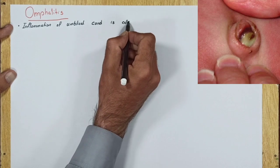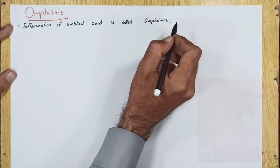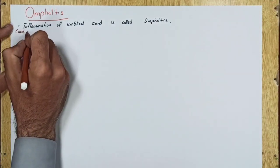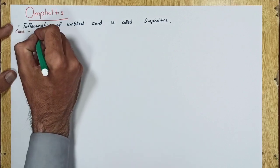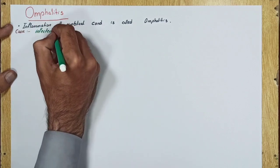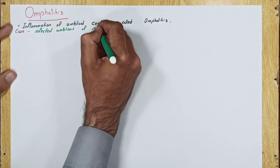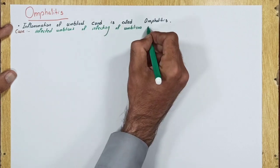The causes of omphalitis are infected umbilicus or infection of the umbilical cord while cutting it in newborns.